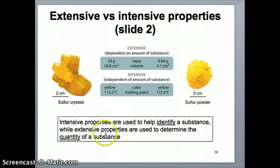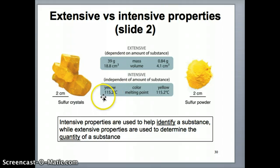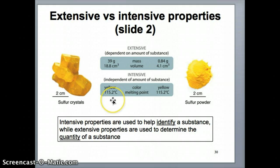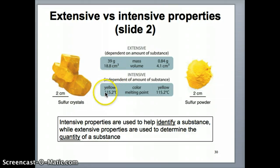Intensive properties are usually used by chemists or scientists to help identify what a substance is, because that property doesn't change. Whether you have a lot of sulfur or a little bit, if I know the melting point is 115.2 degrees Celsius, and I melt an unknown substance and find it to be 115.2, I might guess that substance is sulfur because it matches. Sulfur always melts at 115.2. So intensive properties serve as a fingerprint for a particular substance.